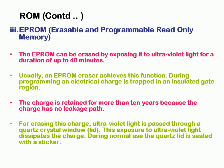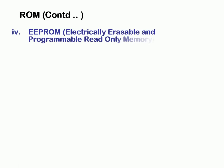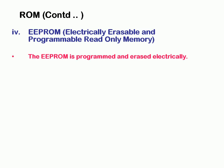The next type is EEPROM — Electrically Erasable and Programmable Read Only Memory. The EEPROM is programmed and erased electrically. After programming, whenever we require, we can delete the data and program it again. The erasing and rewriting is done with the help of electrical signals.